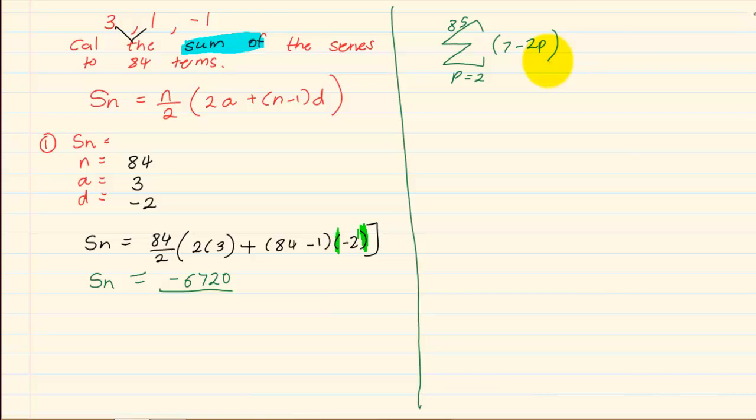The question in the exam paper would look exactly as I had written it now. It will maybe be question 4.1 and would say solve. Now what are they giving us? They are telling us it's a sigma notation which immediately means sum of.